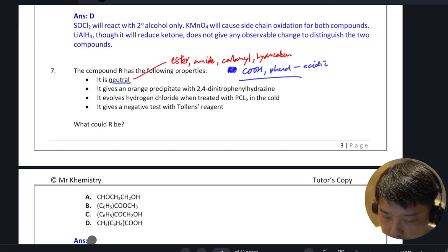Then the second bullet point: it gives an orange precipitate with 2,4-DNPH. If so, there is carbonyl present.